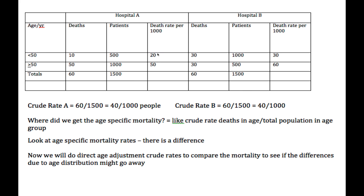But when you look at the age-specific mortality as given here, in the less than 50 age group it would be 10 over 500 for 20 per 1,000, and 30 per 1,000 for the older group. You see that for both age groups, Hospital B is higher than Hospital A, making us wonder if they have higher mortality rates and if the crude mortality rate is actually reflecting what's going on.